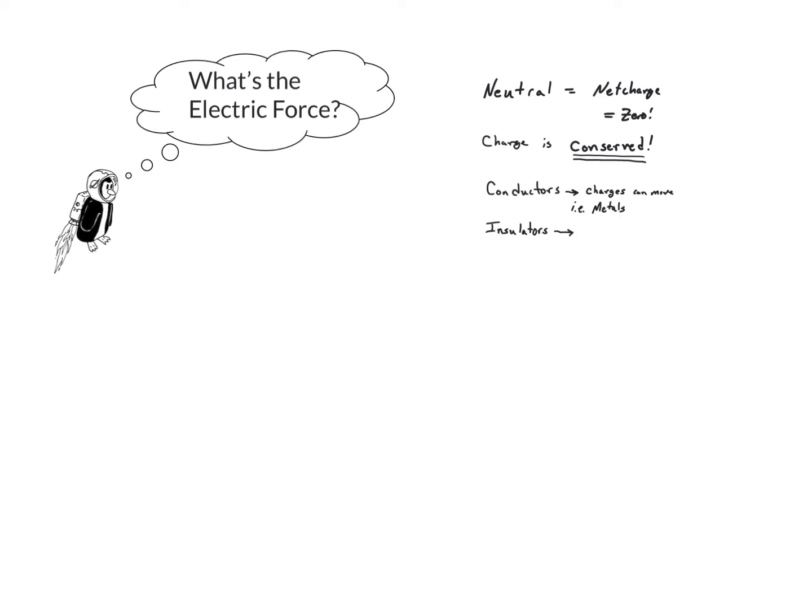The other broad category are insulators, materials that resist the movement of charges. These are things like rubber or wood.